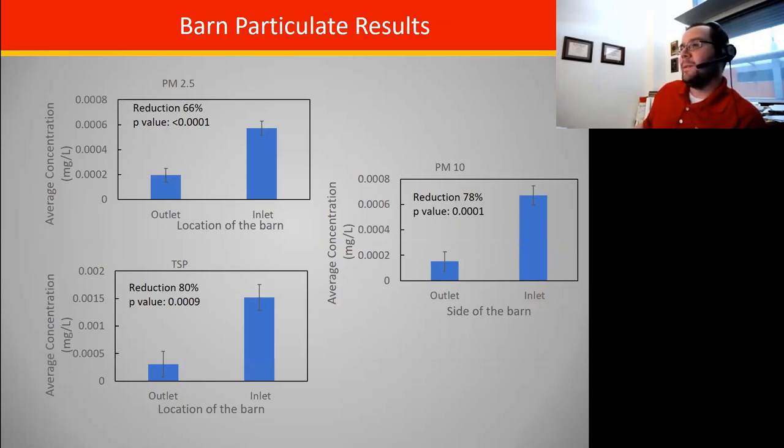The other thing I should probably mention is we did have two reps of this system. The barn we were working with was a double wide barn, so they had this system set up on both sides of it. So every time we took a measurement, which was every other week, we got two sampling results, one from each side.